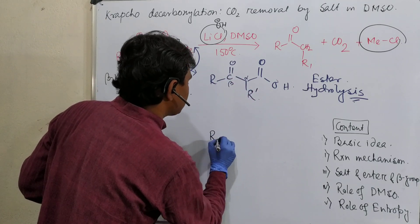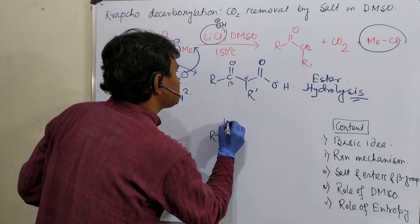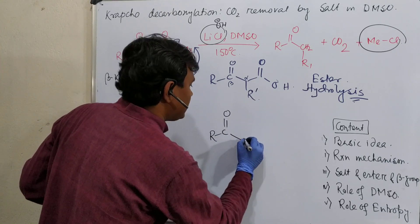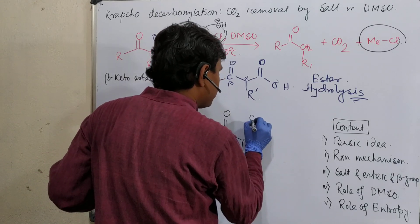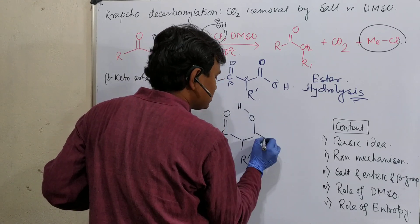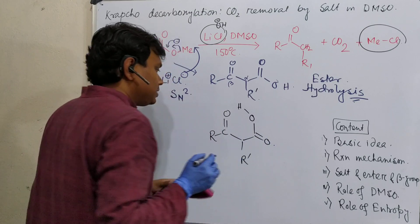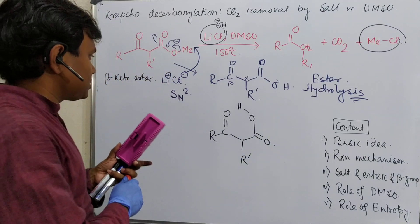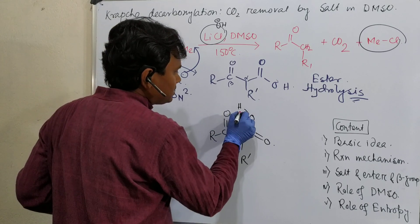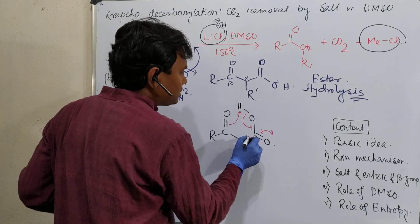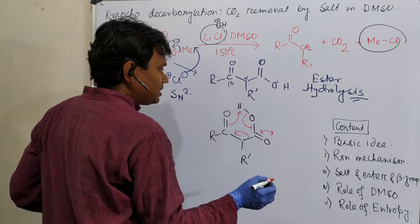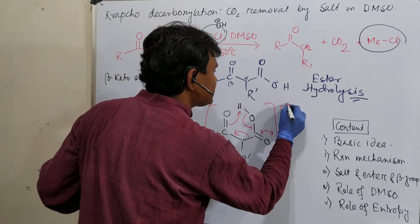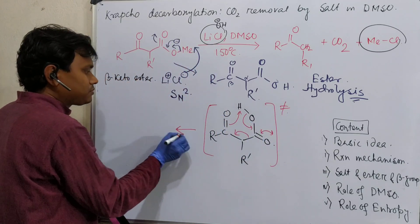So R, this is O, this is R', and let's draw properly. This is O, this is O. So how does the reaction happen? Through a six-member cyclic transition state - this is abstracted, it comes, this comes. So this is the transition state - six-member cyclic transition state.